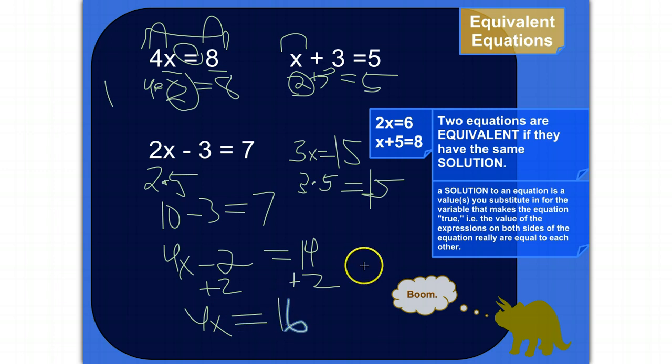So I can actually write a new equation that says 4x is equal to 16. And I know that, because I followed this rule appropriately, I know that this equation is equivalent to this original equation. So if I find the solution to this one, it's the same solution as this one. And actually, I can divide here, divide both sides by 4, and I have x equals 4.